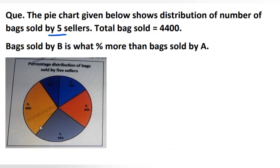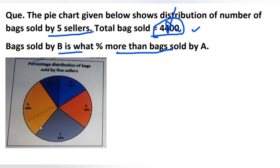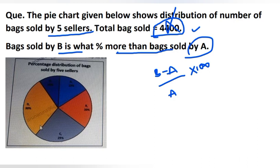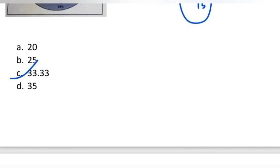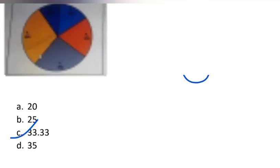The pie chart shows the distribution of bags sold by five sellers, with total bags sold being 4,400, so one percent equals 44. The question asks: bags sold by B is what percent more than bags sold by A? We only need the percentages, not actual values. Using the formula (B - A) / A: B is 20%, A is 15%, so (20 - 15) / 15 = 5/15 = 1/3, which equals 33.33%. Option C is the correct answer.